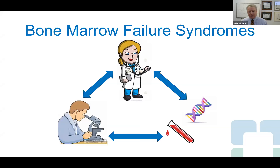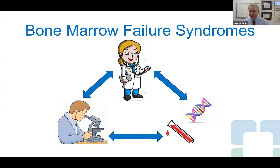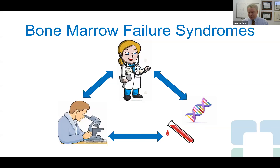We can also divide these up depending on the types of cells involved. Some are uni-lineage disorders where just one cell type is affected — either red blood cells, white blood cells, or platelets. In other conditions, all of these are involved, producing pancytopenia. The diagnosis of bone marrow failure syndromes is fairly complex. As a hematopathologist, I spend the largest piece of my day looking at bone marrow biopsies, peripheral blood smears, and lymph node biopsies.